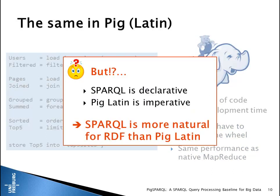The problem when it comes to RDF is that Pig Latin and SPARQL are quite different: Pig Latin is an imperative language whereas SPARQL is more declarative, similar to SQL. So for RDF data analysts, it's more natural to write queries in SPARQL than in Pig Latin.